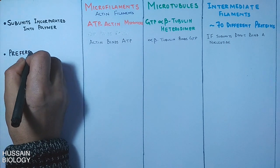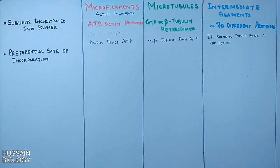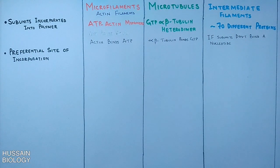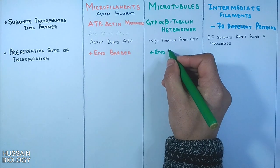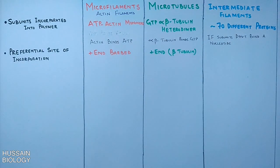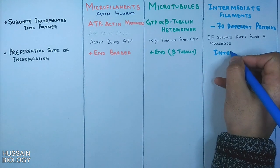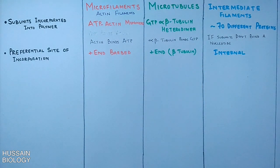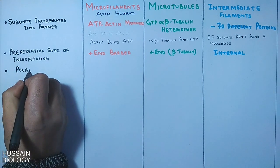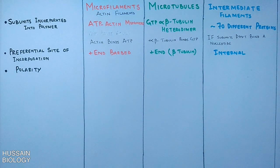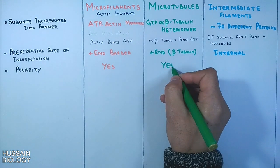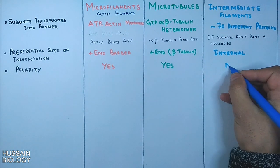Now let's see what the preferential sites of incorporation of these subunits are. The subunits in microfilaments are incorporated at the plus end. In microtubules, subunits are also incorporated at the plus end, whereas in intermediate filaments subunits are incorporated internally. Both microfilaments and microtubules have polarity with plus and minus ends, while intermediate filaments do not have any polarity.